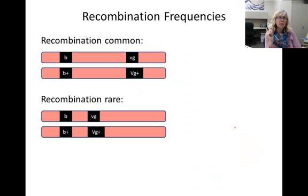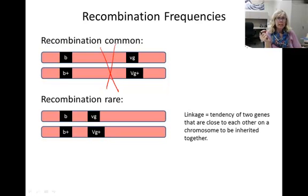Recombinants are more common if the two traits are far apart on the chromosome rather than close together, because it's easier to get a crossing over event between alleles when the genes are far apart. Before the days of DNA sequencing, scientists could use recombination to determine how close together genes were on the same chromosome. Close genes are considered linked, where linkage is defined as the tendency of two genes to be inherited together if they're close to each other on the chromosome.